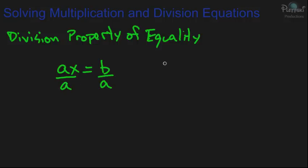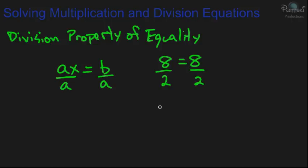If we want to look at this with actual numbers, let's say we have 8 equals 8. With the division property of equality, if you divide one side by a number — let's say 2 — it's going to equal the other side also divided by 2. 8 divided by 2 is 4, and 8 divided by 2 is 4, so 4 still equals 4. One side of the equation still equals the other side.